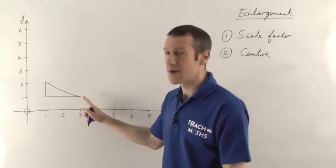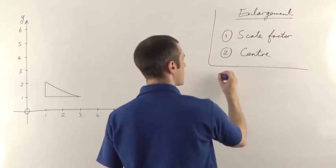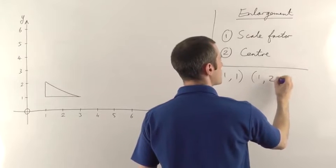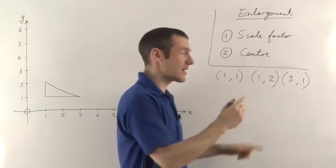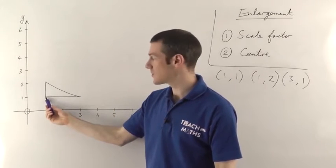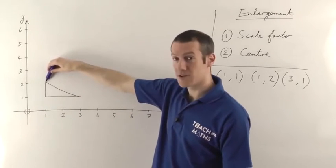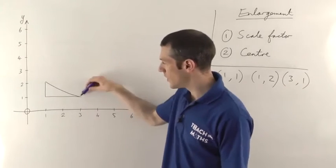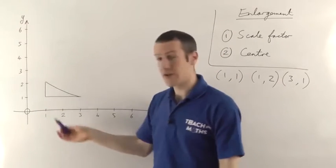Before we do that, we need to know the coordinates of the shape. Sometimes they won't give you the shape — they'll just give you a set of coordinates. So our coordinates are going to be (1,1), (1,2), and (3,1). Remember it's x first, y second. So (1,1) is the bottom left corner, (1,2) means 1 to the right and 2 up — that's the top left corner. And (3,1), that's 3 to the right and 1 up, so that's the bottom right corner. These three coordinates are the corners of the shape.